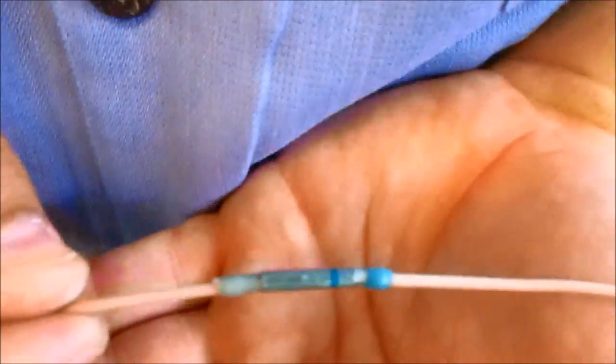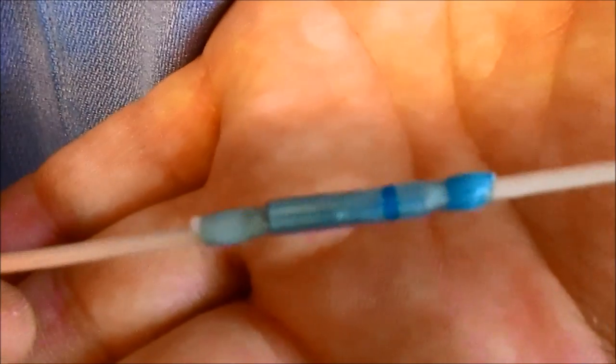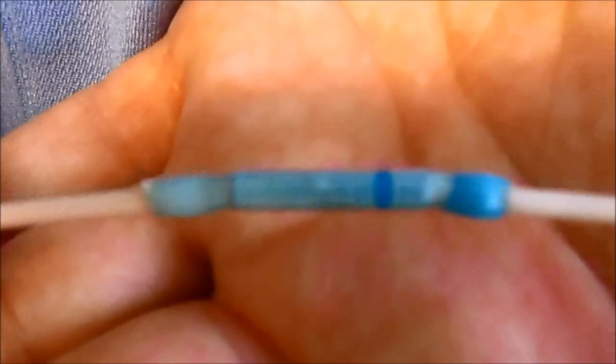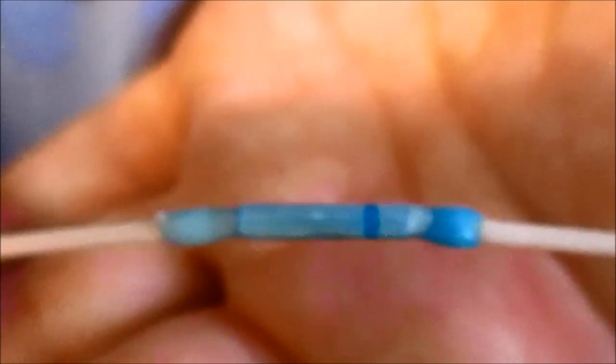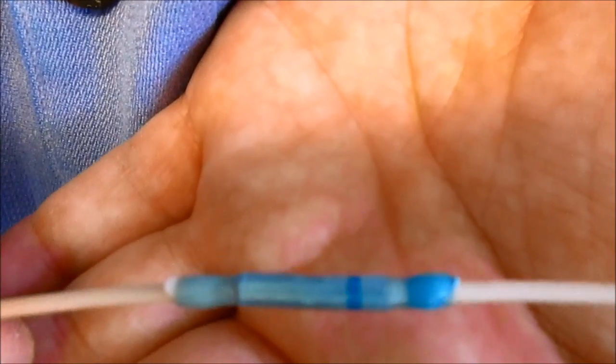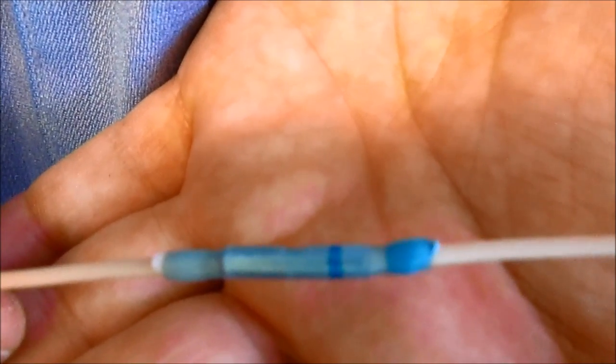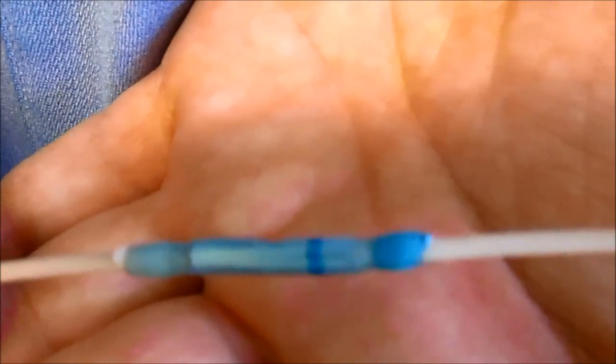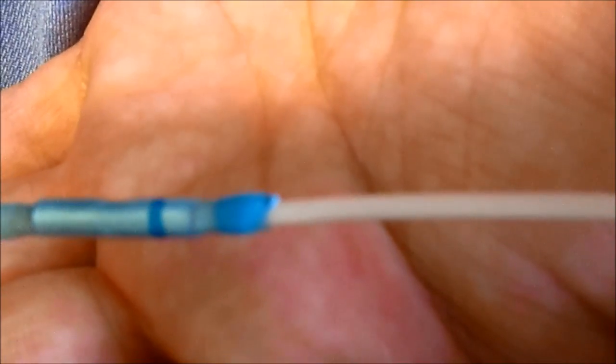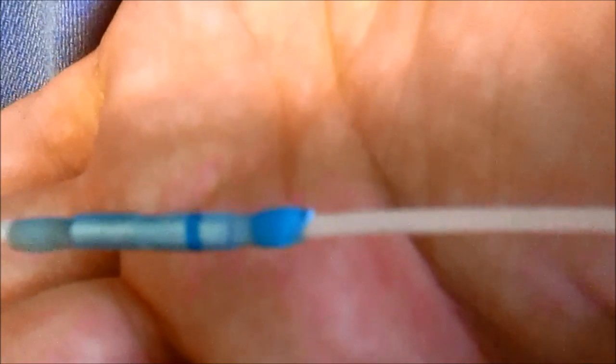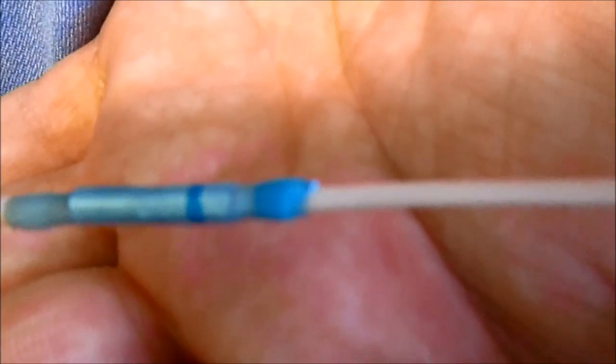Okay, now hopefully you can see here again, I'll use my hand, that this aviation-type shrink tubing is clear so that you can actually still see the blue stripe on the splicer. And also notice that this end of the shrink tube is also color-coded.